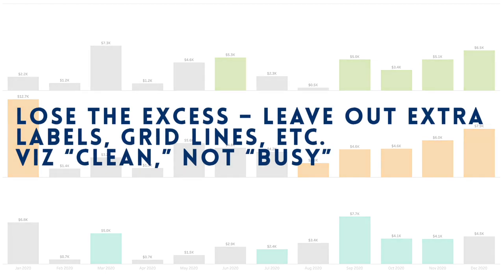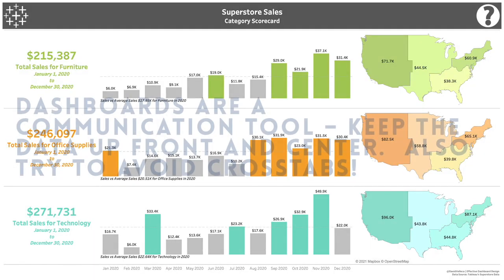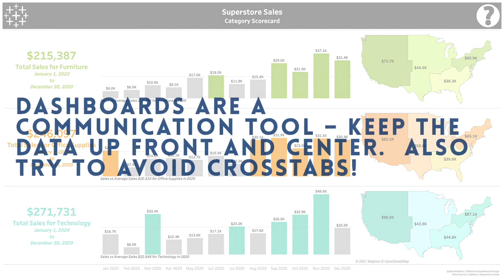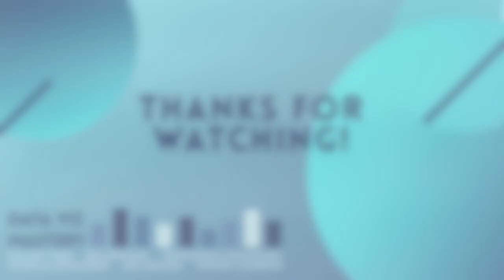Are you already using other elements to tell the user what your colors mean? Do the gridlines really help your viewer know that furniture sold more than technology at Superstore in 2020? Cut them out if you don't need them. And last, summarize and get your message up front and center. You're building a dashboard, not a hidden pictures game. Use human nature and size to purposely place elements for effective communication.